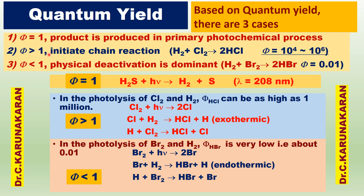Why is phi greater than 1? When chain reactions occur — for example, the photochemical reaction between hydrogen and chlorine — chain reactions occur and the step is exothermic. In the photolysis of bromine and hydrogen, using a similar mechanism but the reaction is endothermic, physical deactivation of the excited molecule is dominant. Therefore phi is less than 1, approximately 0.01.